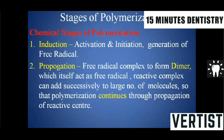The stages of polymerization are classified as chemical and physical. The chemical stages are: first, induction, where activation and initiation occur and free radicals are generated. Second, propagation, where the free radical forms a complex, and that complex aggregates to form a dimer, which itself acts as a free radical, successively adding large numbers of molecules to continue polymerization.